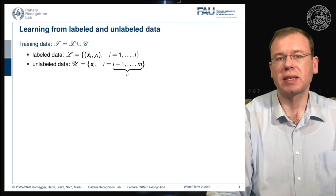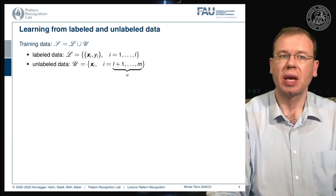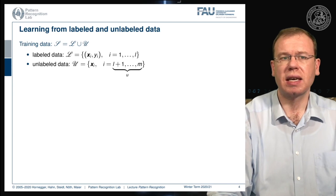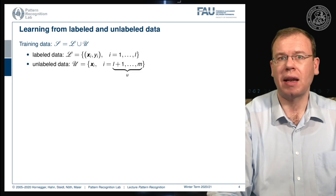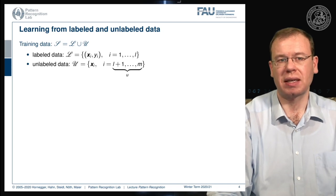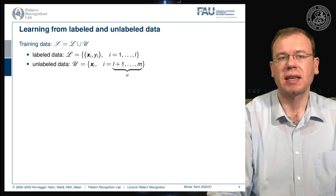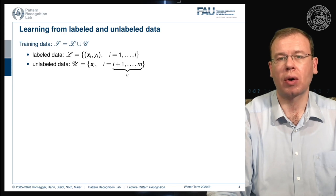In order to introduce this, we have to introduce a couple of concepts. First of all, our training data is now composed of two sets. The complete training data is composed of L, the labeled data, with a total of L observations. Then we have the unlabeled data U, giving us additional observations up to index M. So our entire training data set has M observations, but only L are labeled and U are unlabeled.